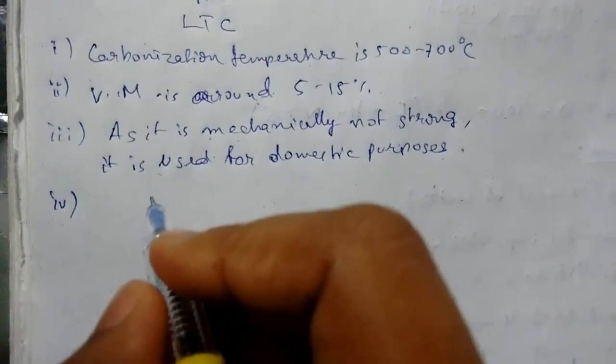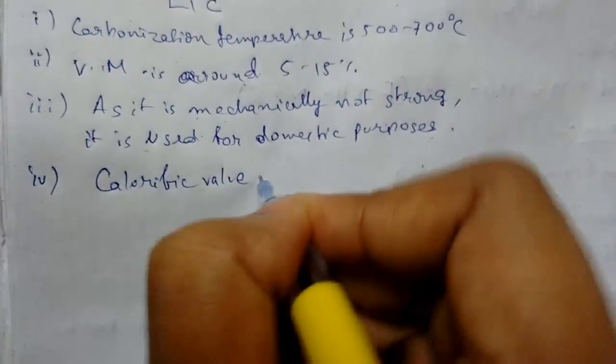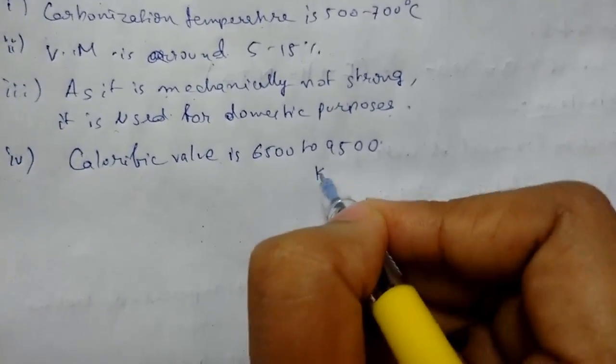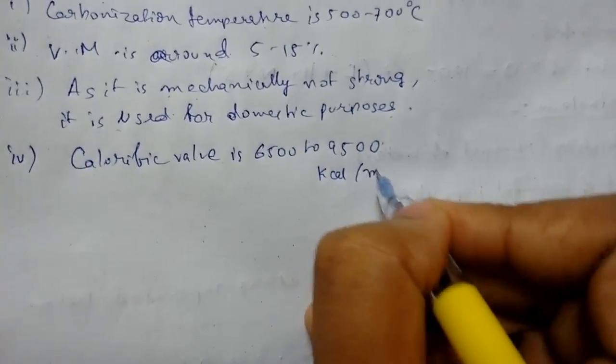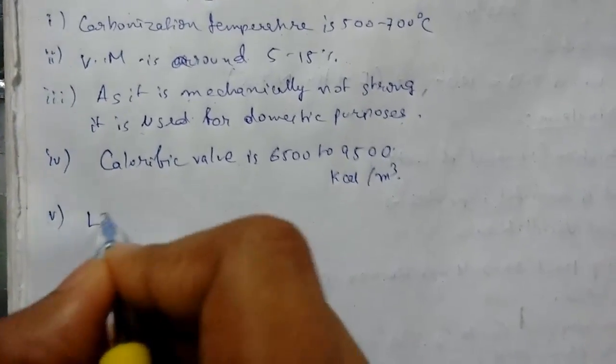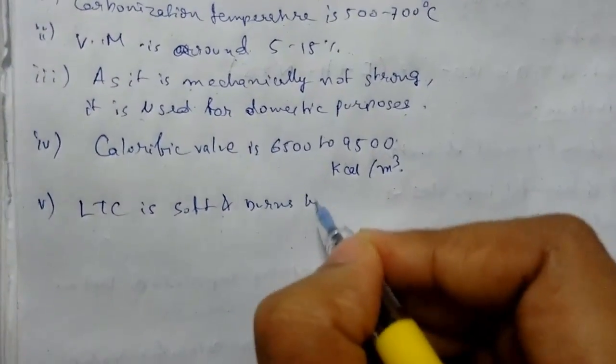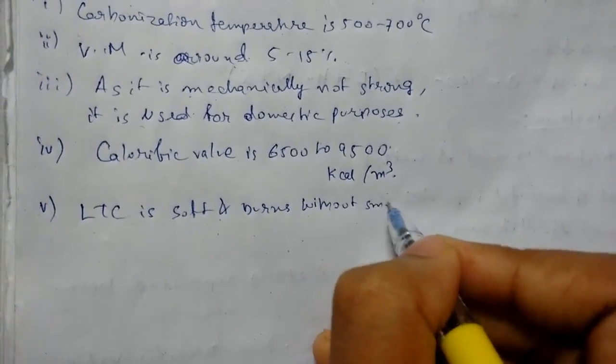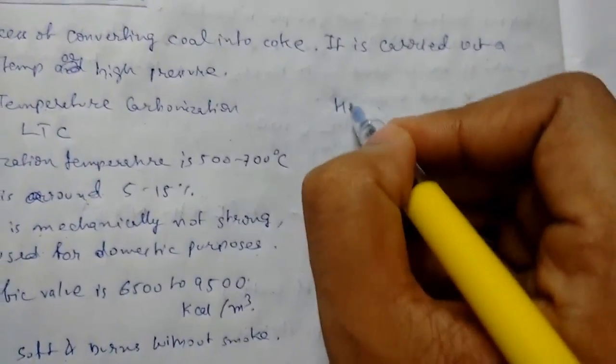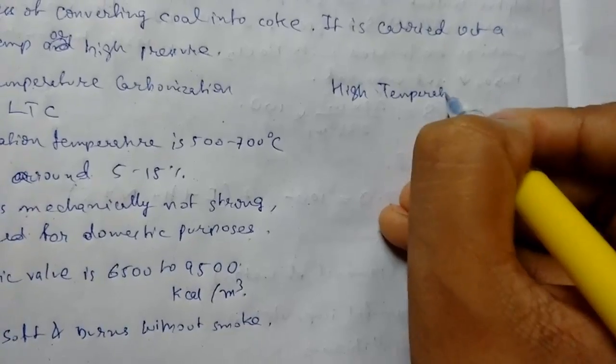Next we have calorific value that is 6500 to 9500 kilocalorie per meter cube. Next, LTC is soft and burns without smoke. So these were the characteristics of LTC. Now we will discuss HTC, high temperature carbonization.